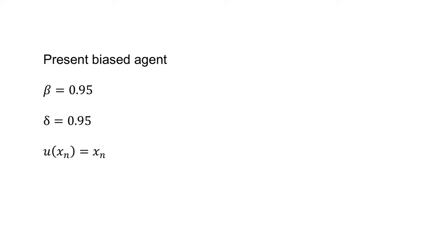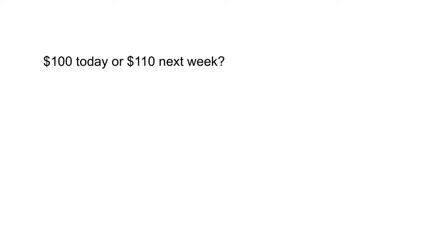The present biased agent has delta equals 0.95, beta equals 0.95, and utility each period of u(x) equals x. Would this agent prefer $100 today at t equals 0 or $110 next week at t equals 1? The discounted utility of the $100 today is u(0, 0, 100), which equals the utility of $100, which equals 100.